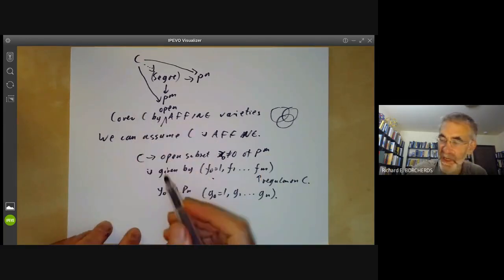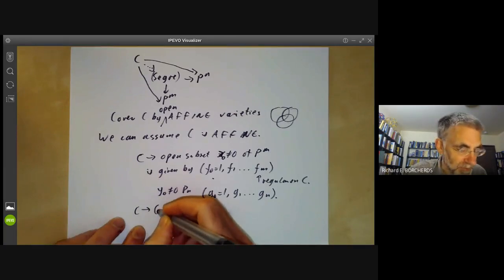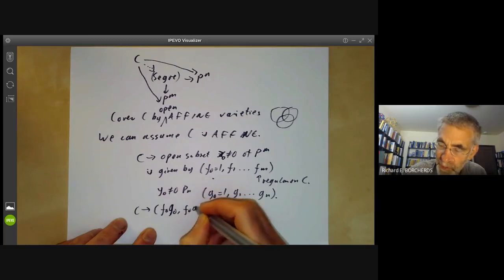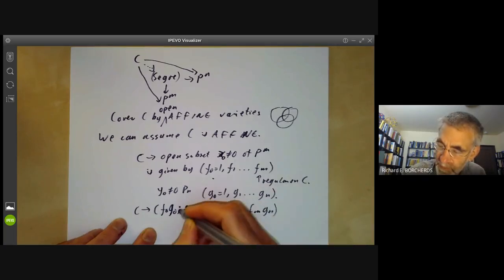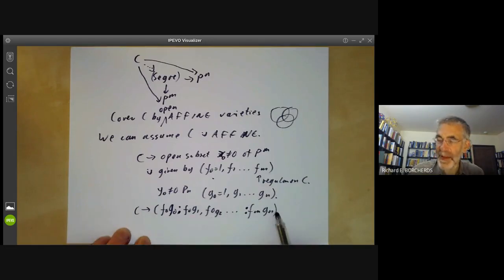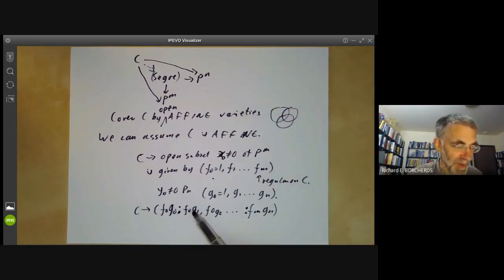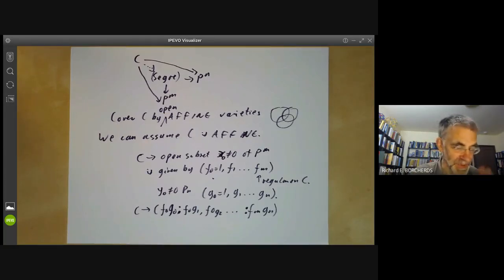Well, now we can define a morphism of C to the Segre embedding just by mapping C to F naught G naught, F naught G1, F naught G2, and so on up to FM GN. So this gives a well-defined map from C to projective space, in fact, to an open subset of projective space. And now we just have to do a lot of small checks, checking that this is all well-defined and that all these maps are the same on the intersections of open subsets and so on. And all of these checks are rather trivial and not terribly exciting to watch. I'm just going to omit them.